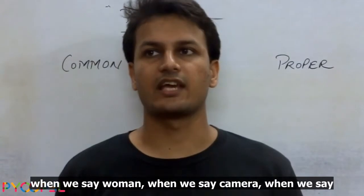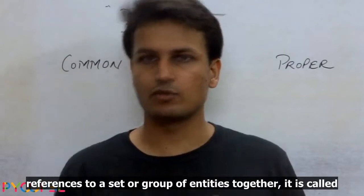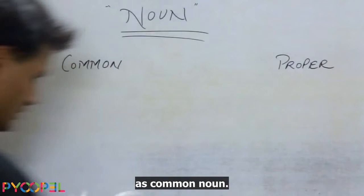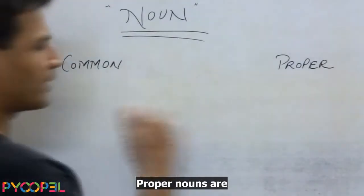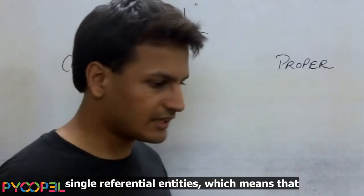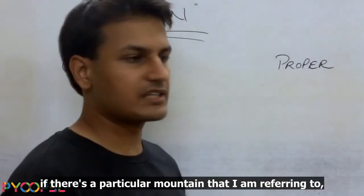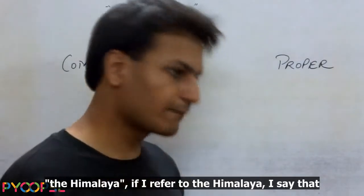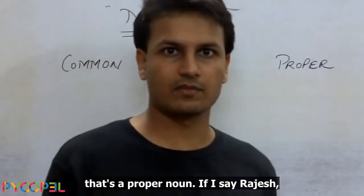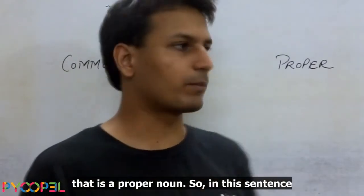When we say camera, study, or anything that references a set or group of entities together, it is called a common noun. Proper nouns, on the other hand, are single referential entities. For example, if there is a particular mountain I am referring to — the Himalaya — that is a proper noun. If I say Rajesh, that is a proper noun. If I say Mini the Moocha, that is a proper noun.